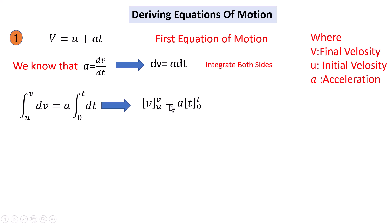v from u to v equals a times t from 0 to t. If you put the boundary values, we get v minus u equals a times t minus 0, which becomes v minus u equals at.